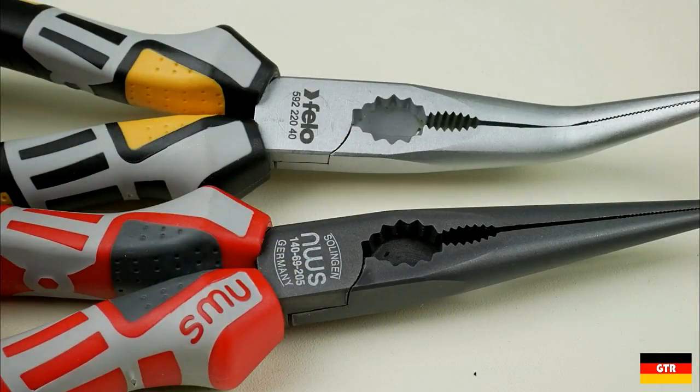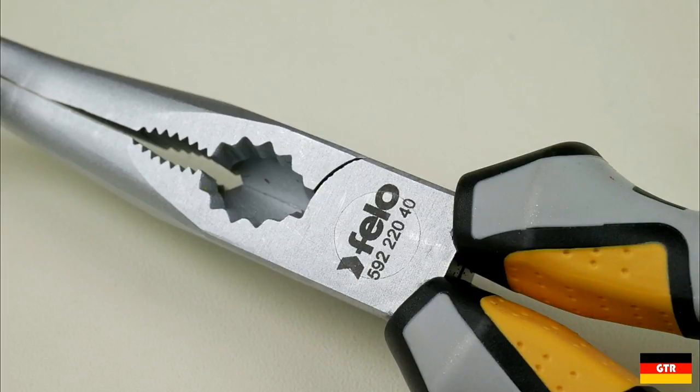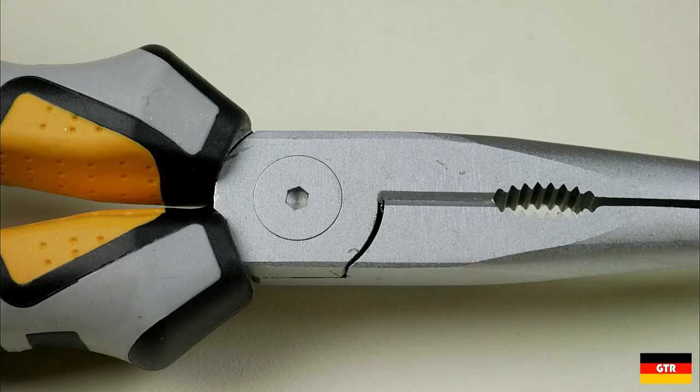The black finish is called Finish 69 by NWS and consists of an oil and induction hardening process that produces the black finish you see here. The matte chrome finish, called Finish 49 by NWS, consists of the same oil and induction hardening process, but also adds a thin layer of chrome.